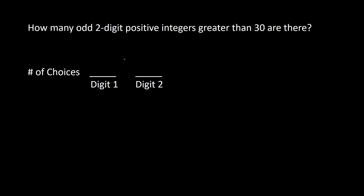We have two digits: digit 1 is the tens place and digit 2 is the ones place. For the tens place, since the number must be greater than 30, the tens digit could be 3, 4, 5, 6, 7, 8, or 9, which gives seven options.